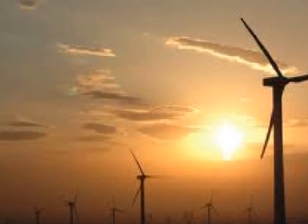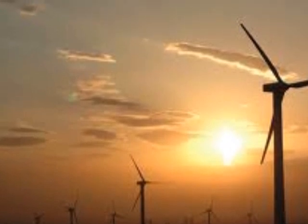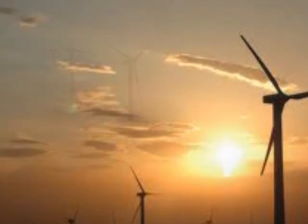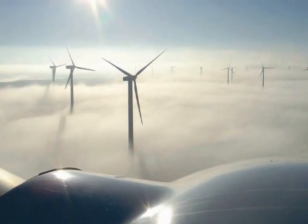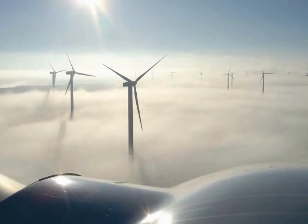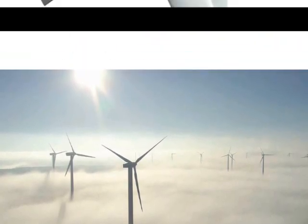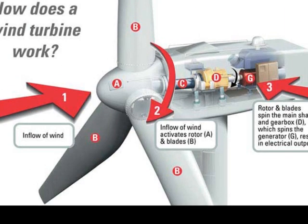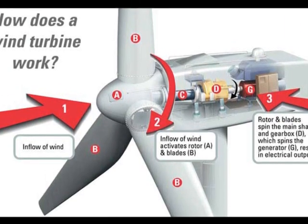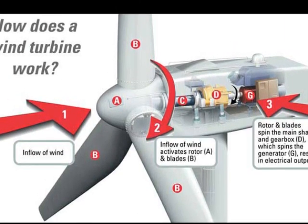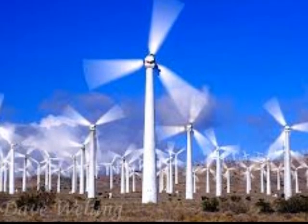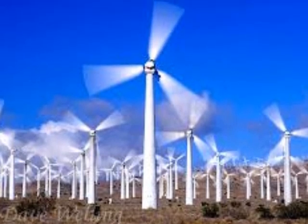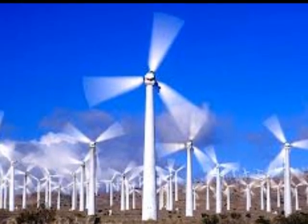A wind turbine is a device that converts kinetic energy from the wind, also called wind energy, into mechanical energy, a process known as wind power. If the mechanical energy is used to produce electricity, the device may be called a wind turbine or wind power plant.